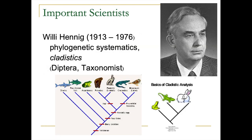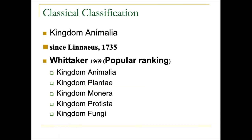Another 100 years later came Willi Hennig, who developed phylosystematics. His idea was that if species share the same common ancestor, they are grouped together. This concept is used in modern systematics and taxonomy. Right now, from the Linnaean age through the 19th century to today, the most popular classification system for teaching is that of Whittaker.